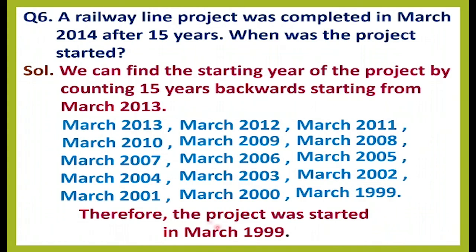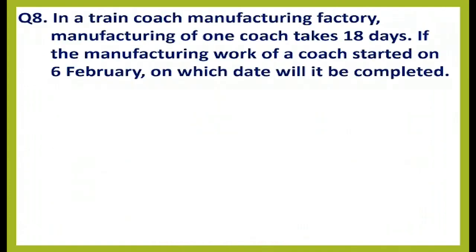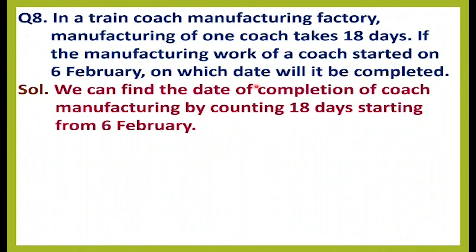Question number eight: In a train coach manufacturing factory, manufacturing of one coach takes 18 days. If the manufacturing work of a coach started on 6 February, on which date will it be completed? We find the finishing date by counting 18 days starting from 6 February.